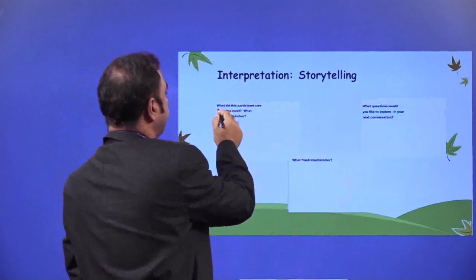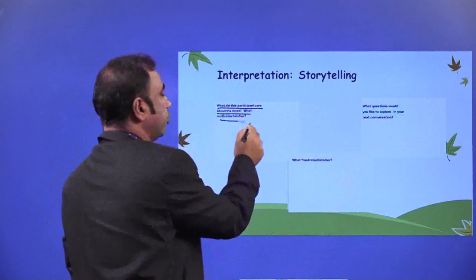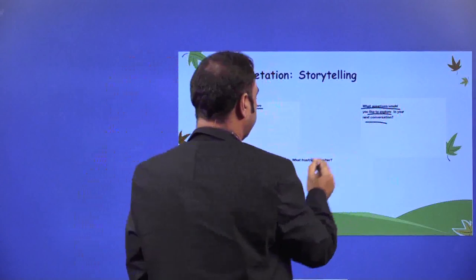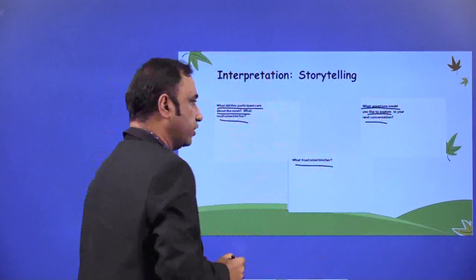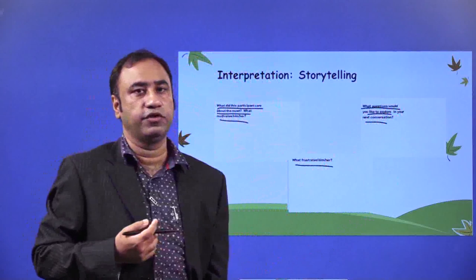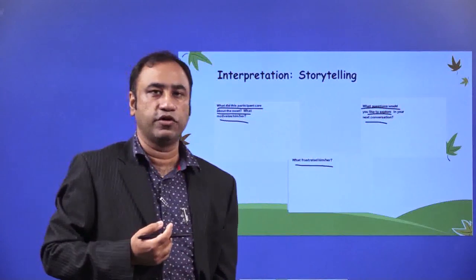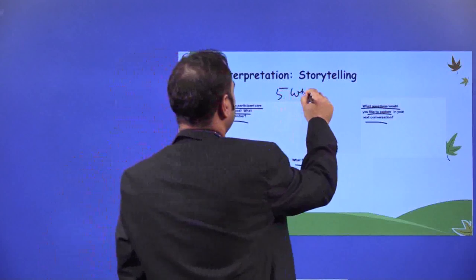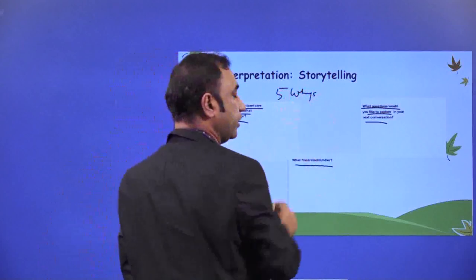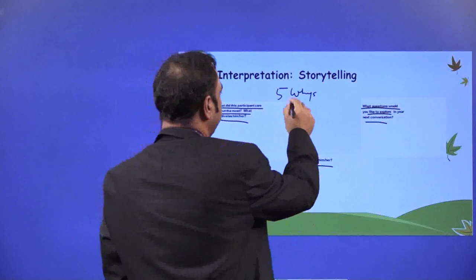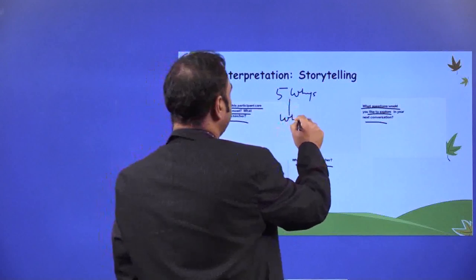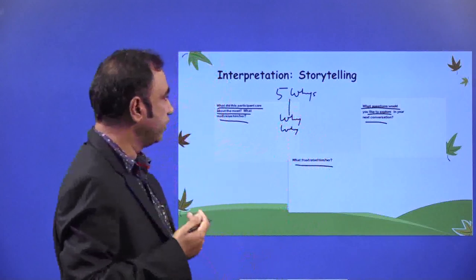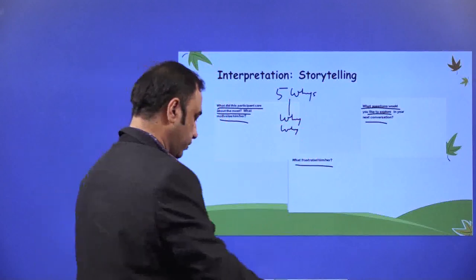In the interpretation and storytelling phase: what did this participant care about the most? What motivates him or her? What questions would you like to explore in your next conversation? What frustrated him or her? These points are very, very important. Remember, we also used the concept of Five Whys in our previous sessions — in the empathize phase and also in the define phase — where we ask 'why' five times for the same question. You need to use such processes here as well to understand the user more in depth.